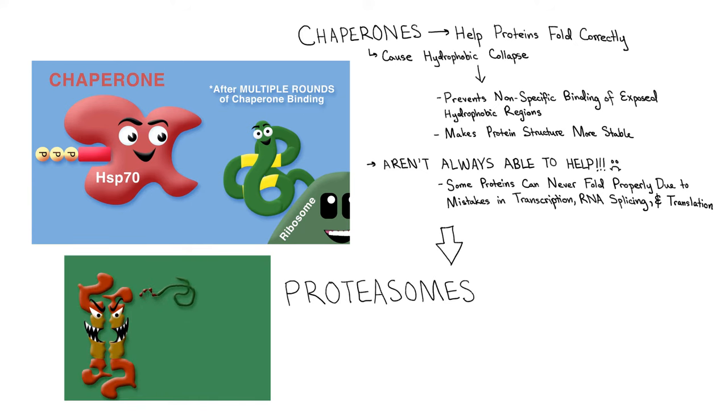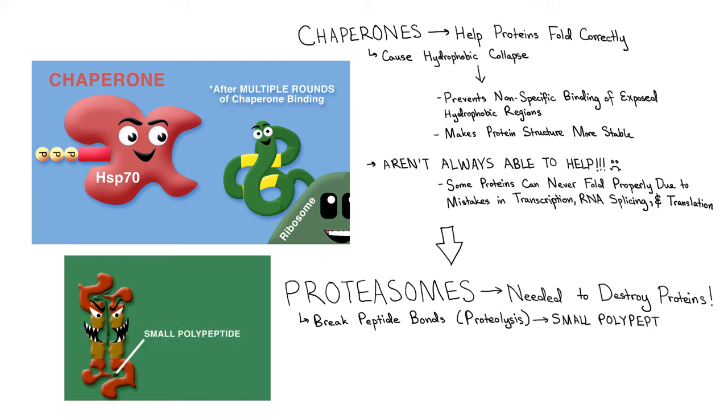Therefore, proteasomes, which will be the focus of this video, are needed to destroy proteins. Proteasomes break the peptide bonds in proteins in a process termed proteolysis, leading to their breakdown into smaller polypeptides, 90% of which range between 2 to 10 amino acids in length.